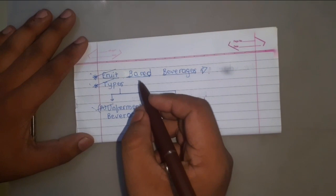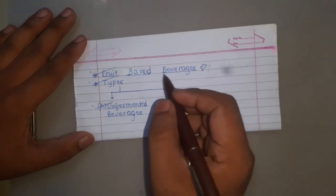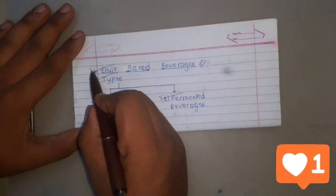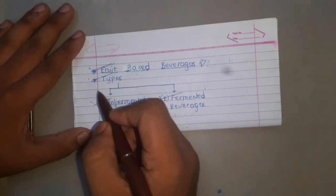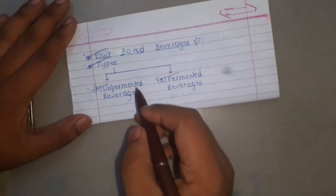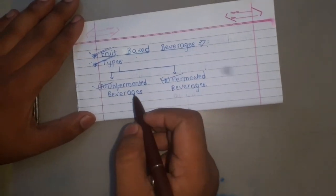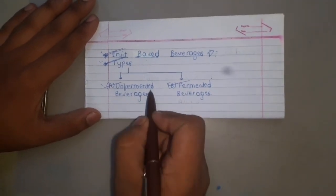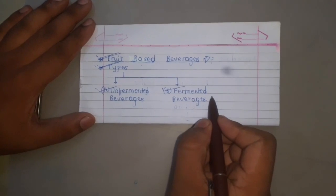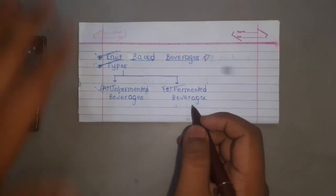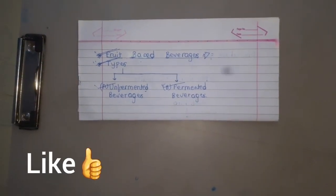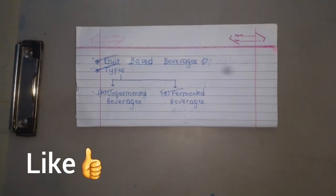Today's subject is Beverages. In this we are going to study the fruit-based beverages and its types. In these types we are going to cover unfermented beverages and fermented beverages. First of all, we will study the definition of beverages.